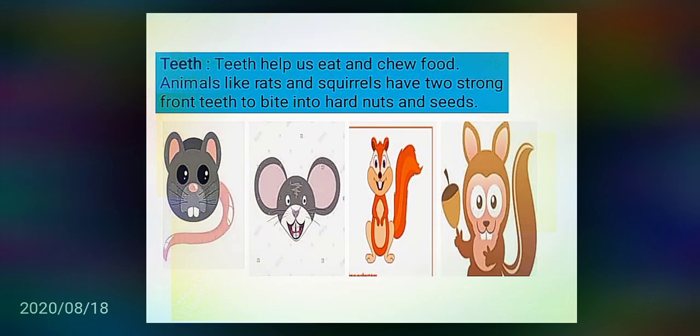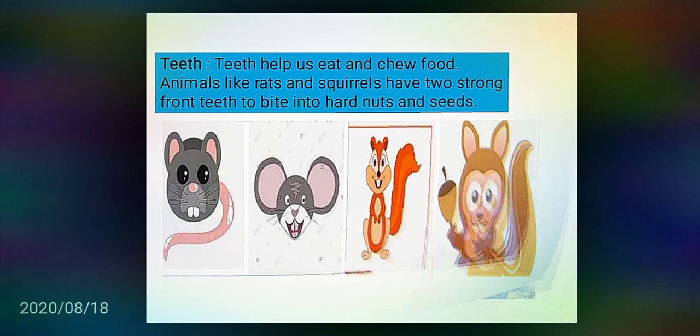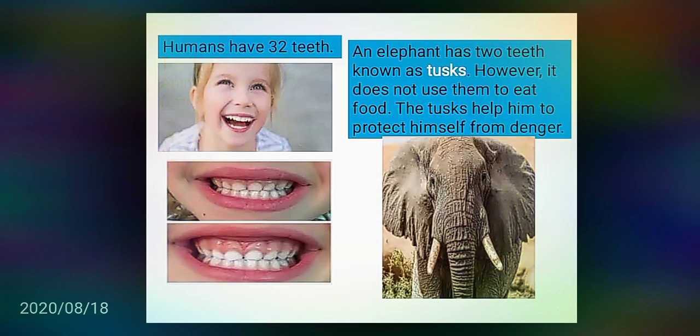Teeth: Teeth help us eat and chew food. Animals like rats and squirrels have two strong front teeth to bite into hard nuts and seeds. Humans have 32 teeth. An elephant has two teeth known as tusks; however, it does not use them to eat food. The tusks help it to protect itself from danger.